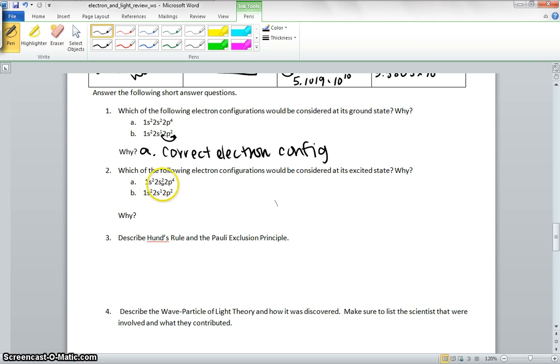Which of the following electrons would be considered to be excited state and why? So we have 1s2, 2s2, 2p4, and 1s2, 2s1, 2p2. So this electron right here got excited and jumped up a whole orbital to the p orbital. So B is going to be excited. And you can see that in the electron configuration. That 1 right here, that should be 2, 1 got excited and moved up an orbital.